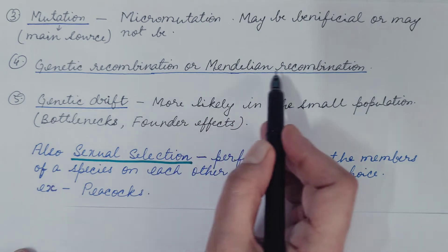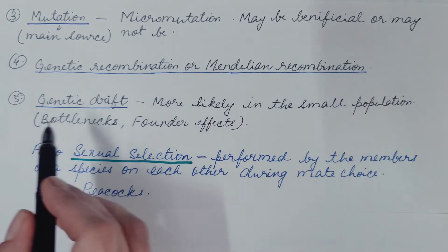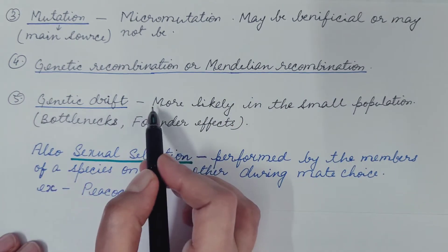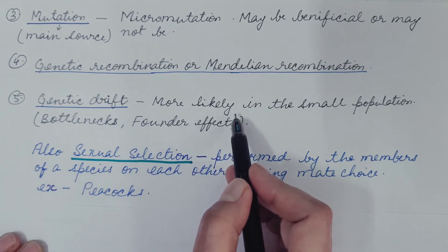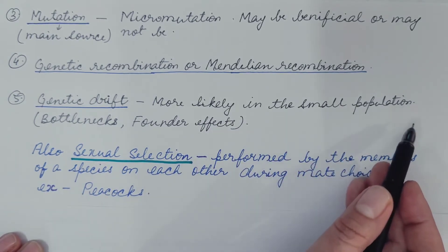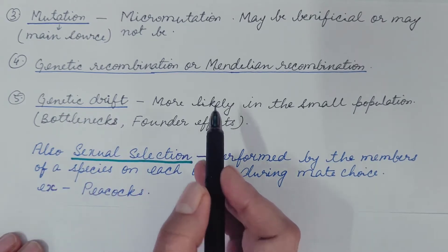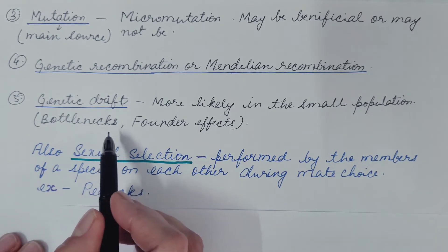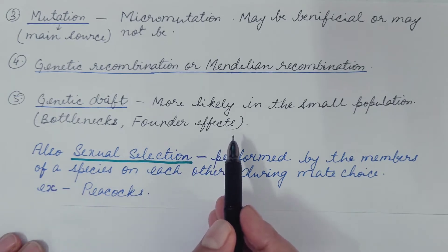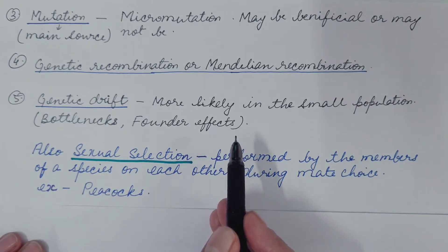Then genetic recombination or Mendelian recombination. Genetic drift. It is random change in the gene frequency and it more likely occurs in the small population. It involves both bottlenecks and founder effects. These five forces and bottleneck and founder effects we will discuss in detail in separate videos.